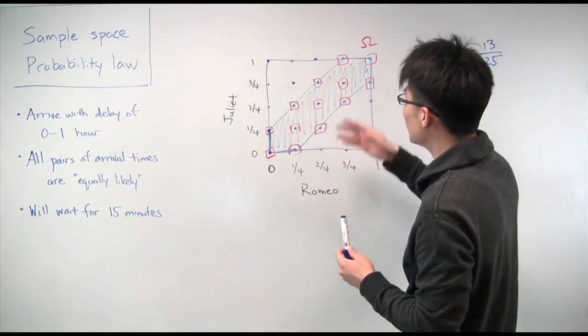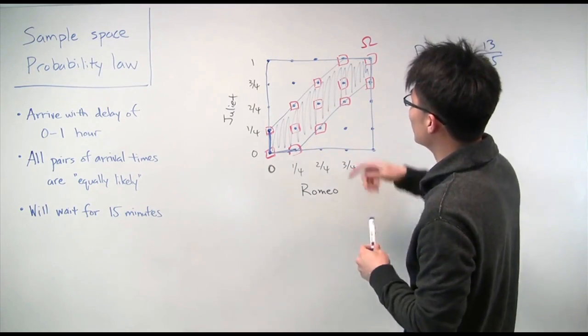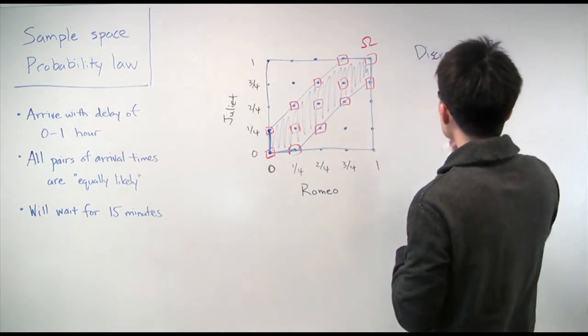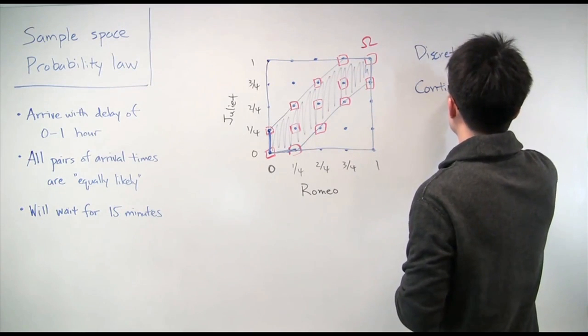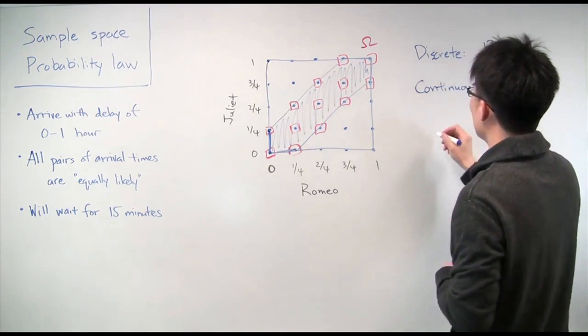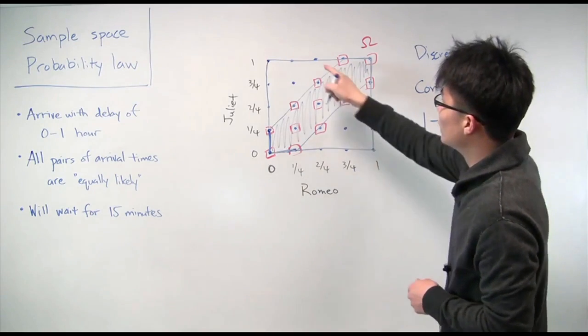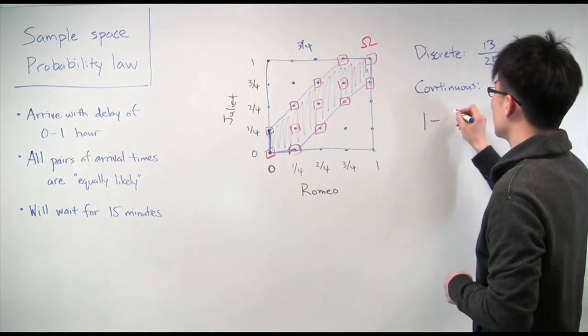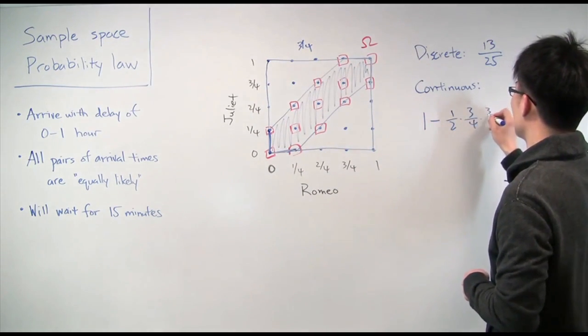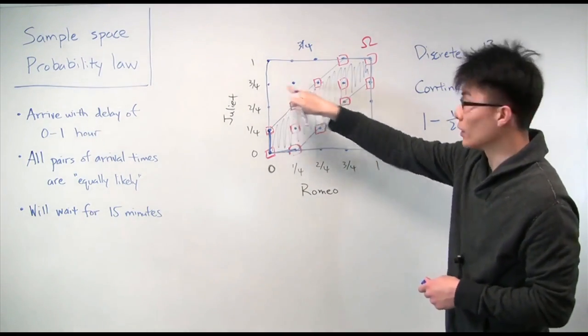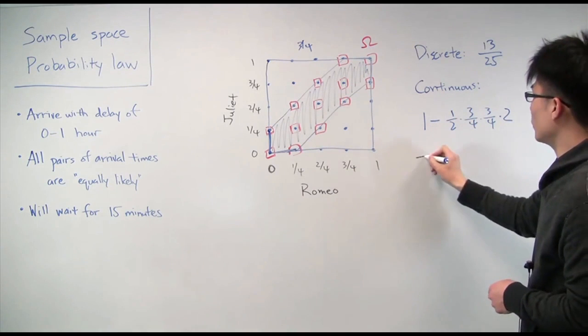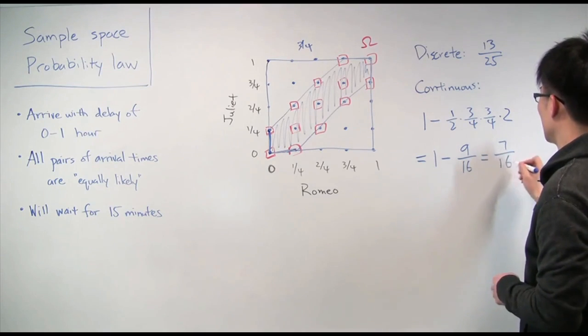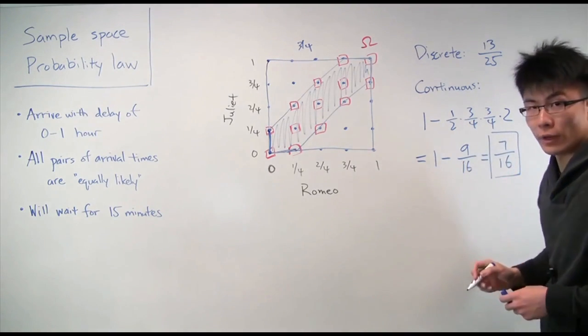So to calculate this area, you can do it in lots of ways. One way is to calculate the area of the square, which is 1, and subtract the areas of these two triangles. So let's do that. So in the continuous case, the probability of meeting is going to be 1 minus the area of this triangle. Well, the base here is 3 fourths and 3 fourths. So it's 1 half times 3 fourths times 3 fourths. That's the area of one of these triangles. There's two of them. So we'll multiply by 2. And we end up with 1 minus 9 sixteenths or 7 sixteenths as our final answer.